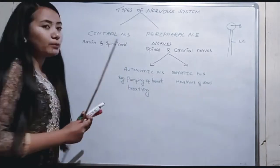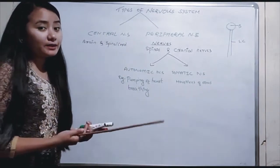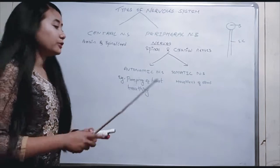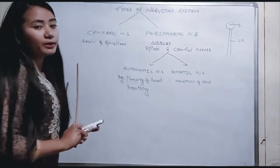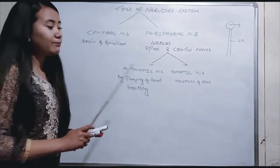The Autonomic Nervous System works automatically — for example, pumping of the heart and breathing. The Somatic Nervous System controls voluntary movements such as arms and legs.